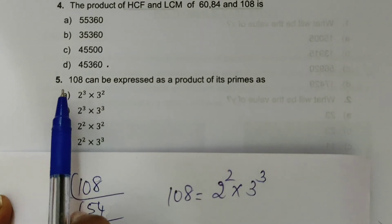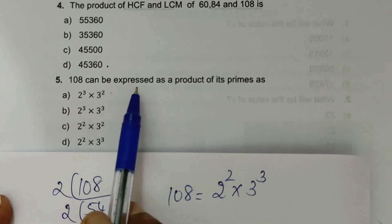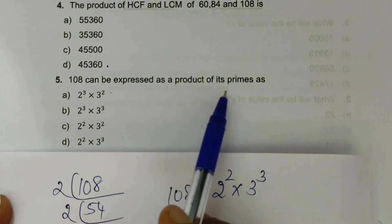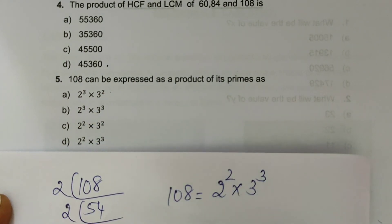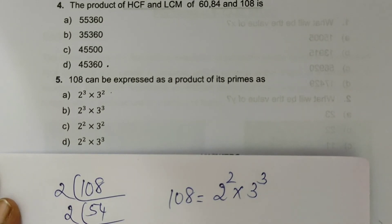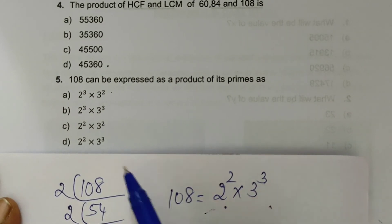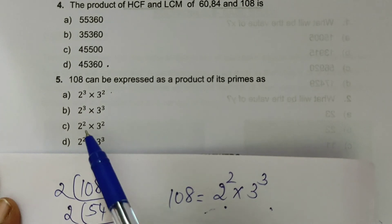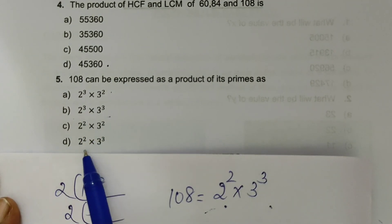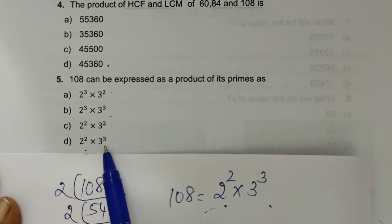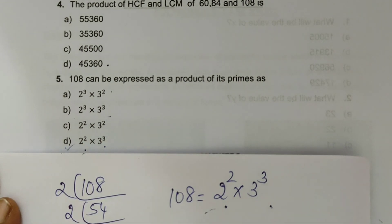This is the fifth question: 108 can be expressed as a product of its prime factors. This was already done during the HCF calculation. The answer is 2 squared into 3 cubed. Option D is the correct answer.